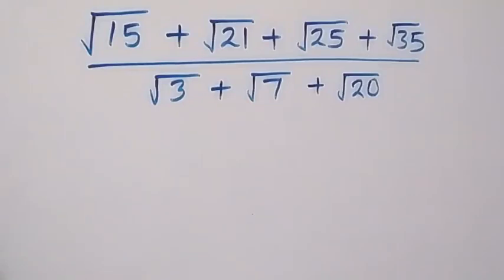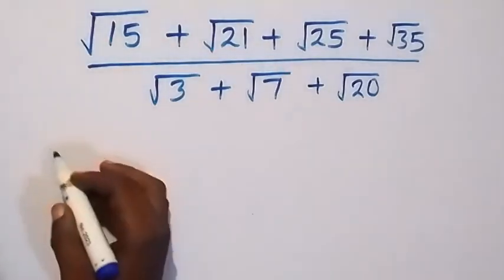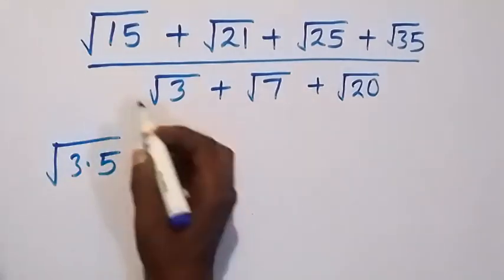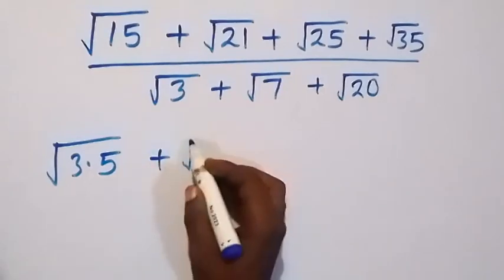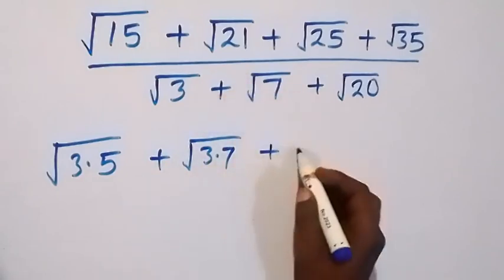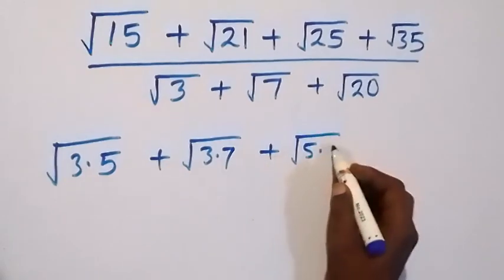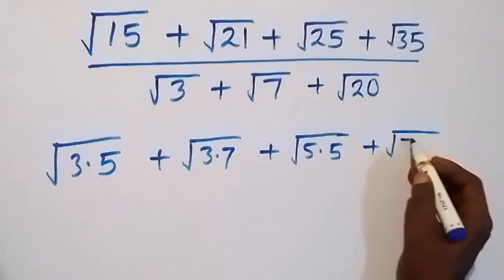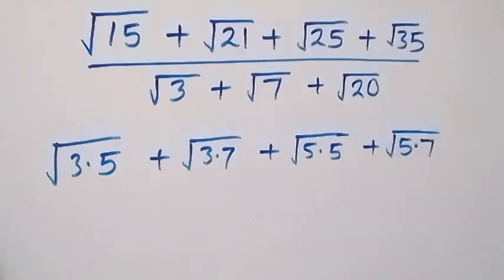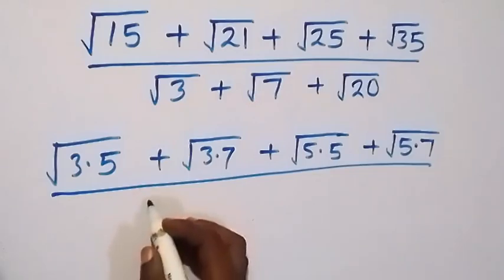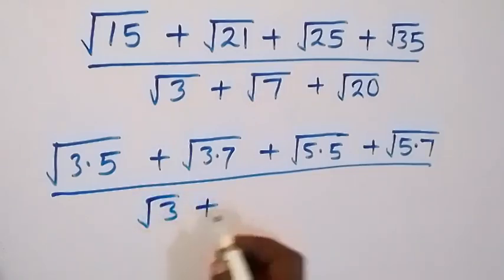Hello, you are welcome. How to solve this nice square root problem. From here we can write this as root 3 times 5, same thing as root 15, then plus here we have root 3 times 7, same thing as root 21, then plus here we have root 5 times 5, same thing as root 25, then plus here we have root 5 times 7, same thing as root 35, then divided by what we have here, which is root 3 plus root 7.